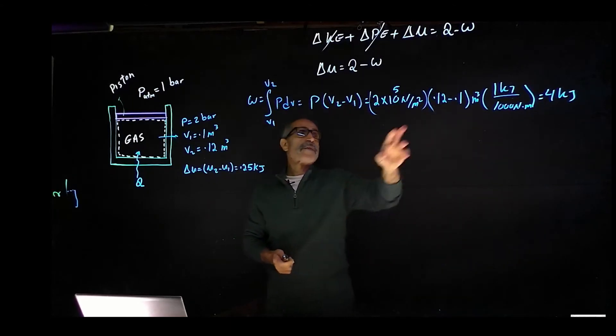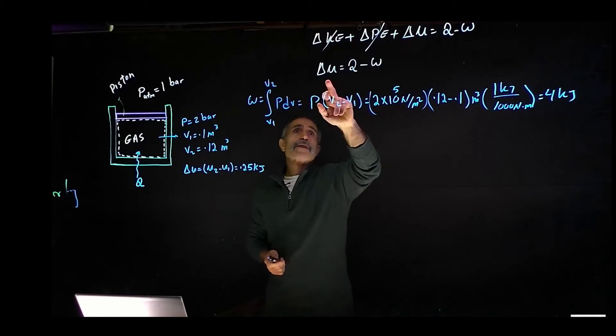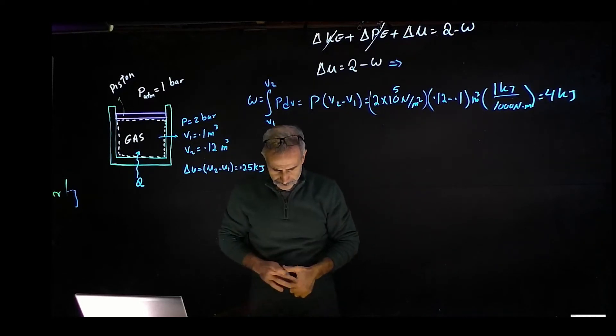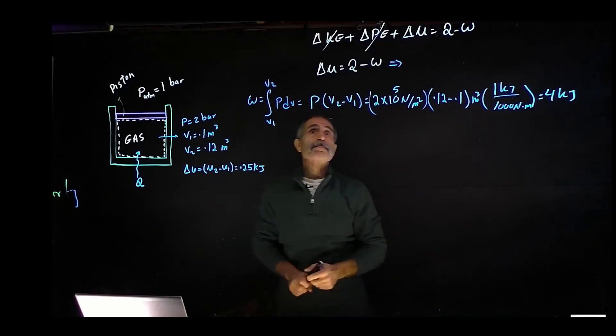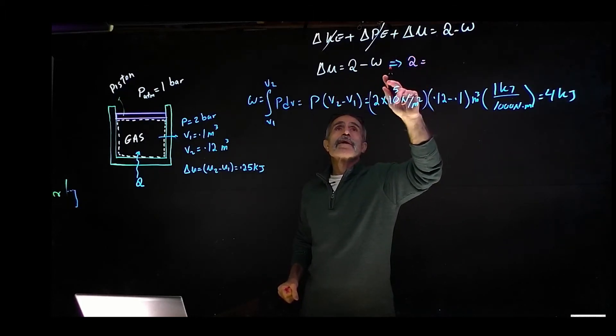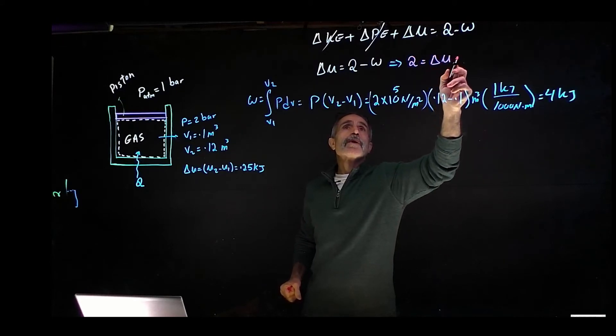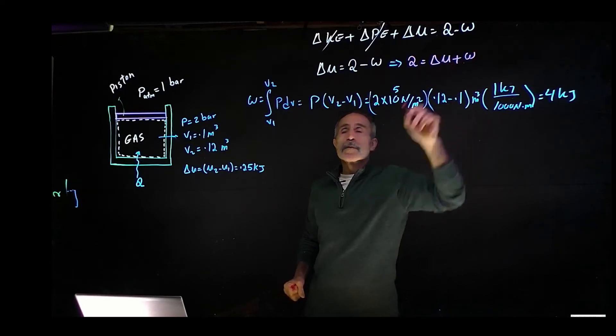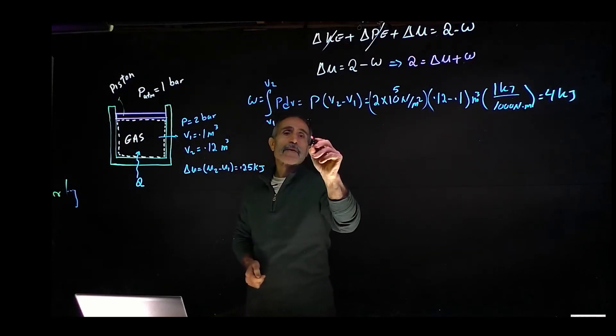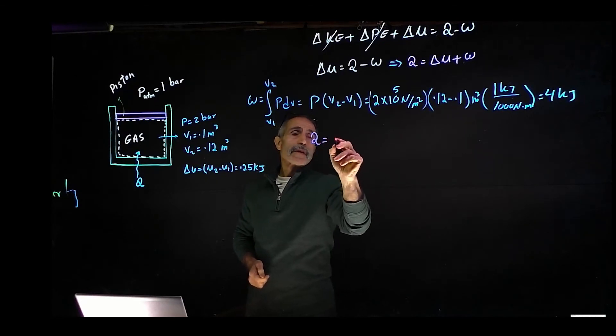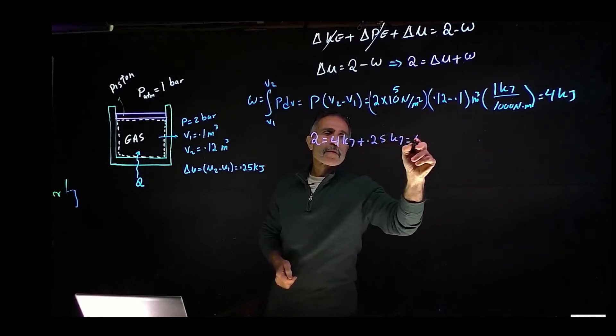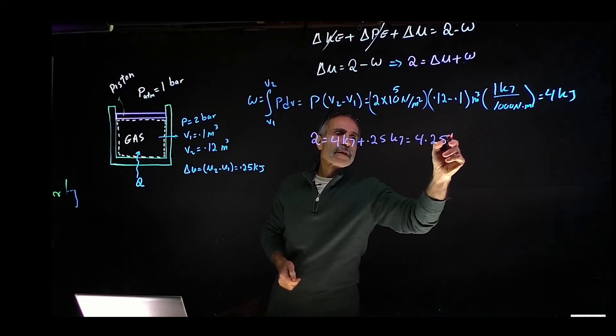Okay, so now we found that. We have this, we have this, we have that. Therefore, from this equation, I'm going to go ahead and say Q is equal delta U plus W. And delta U was this, so my Q is going to come out to 4 kilojoule plus 0.25 kilojoule equals 4.25 kilojoule.